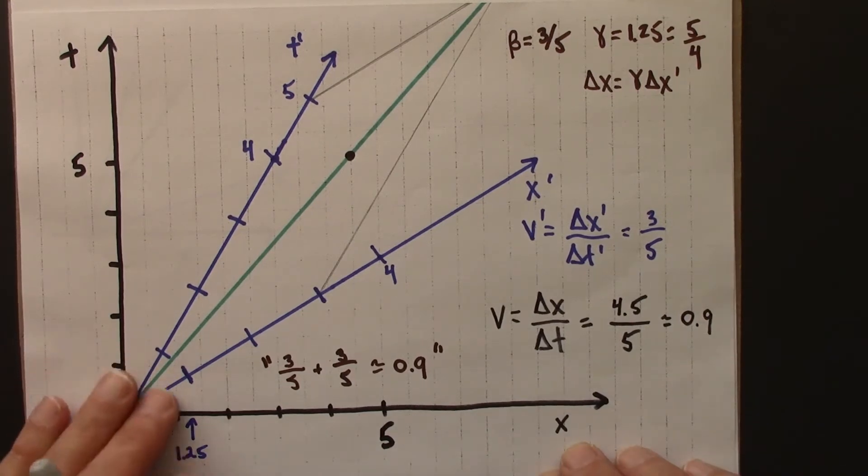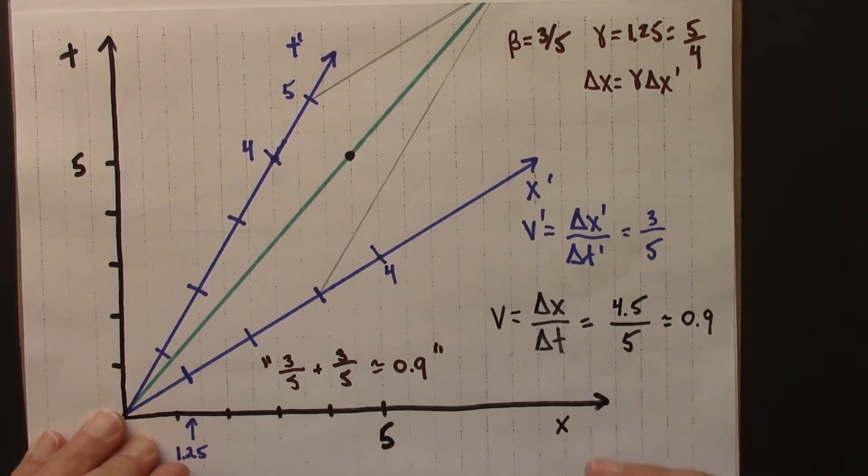In the primed moving frame and in the unprimed frame. In this video, we'll use algebra, specifically the Lorentz transformations, to come up with a more general result. We'll come up with a formula that will relate the velocity in one frame to the velocity in another frame.